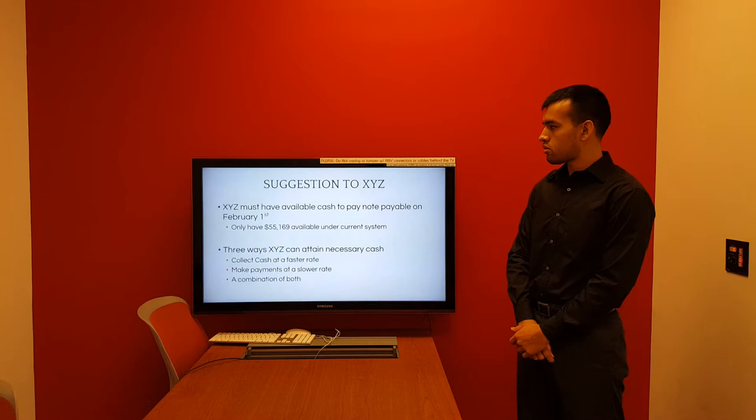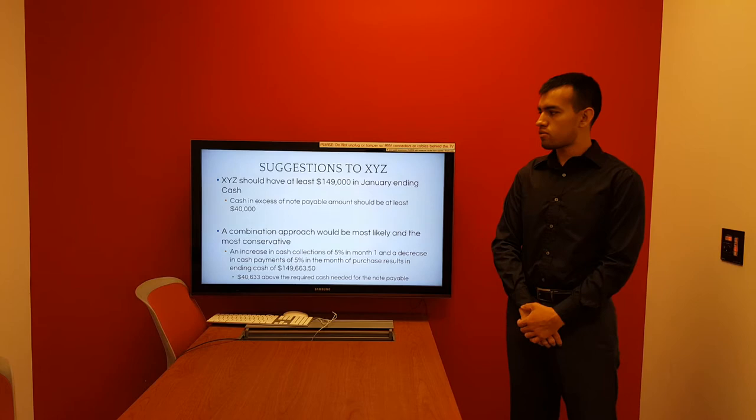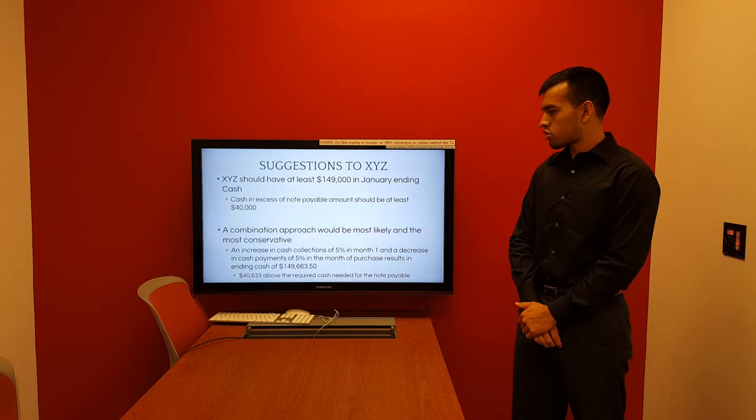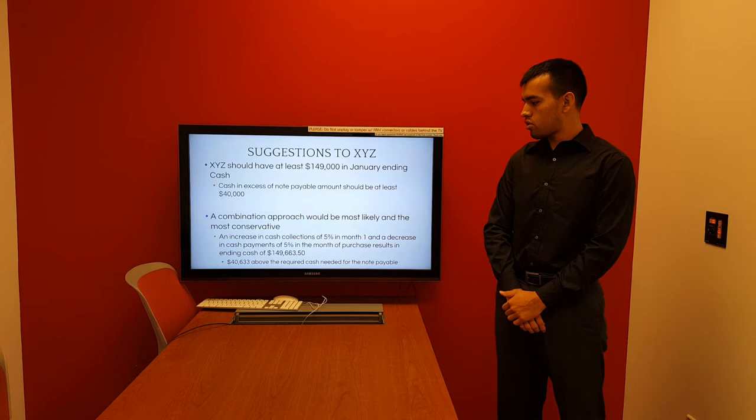We determined that XYZ Company needs to have at least $149,000 so that we could have $40,000 in excess cash for operations purposes. The approach we're going to take is the combination approach, which would increase cash collections and decrease cash disbursements — also the most conservative approach. By doing this, they'll end up with $149,663.50 in their ending cash balance, which is $40,663 above the note payable amount. This concludes our project. Thank you for listening.